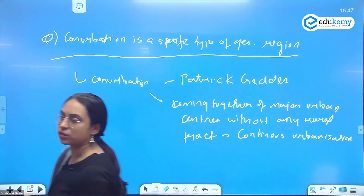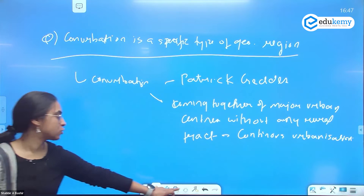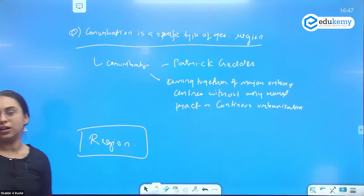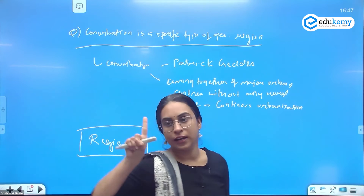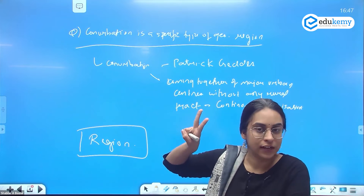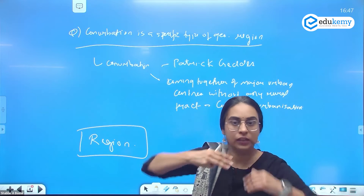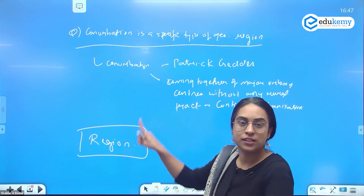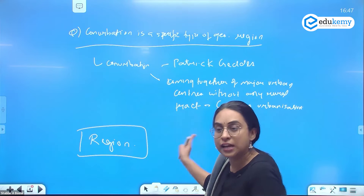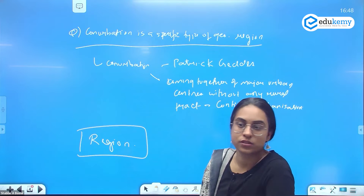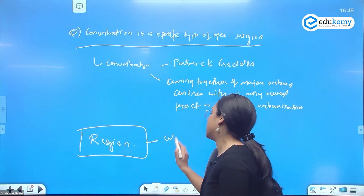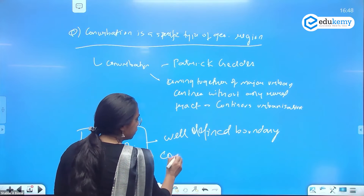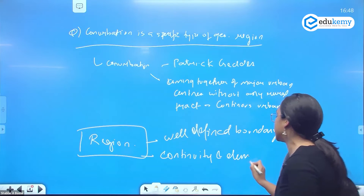Conurbation is a specific type of region. The question is: what is a region? A region has a well-defined boundary, it has homogeneity, and it has interlinkage within and between its elements. Because it has a well-defined boundary, it can be distinct from surrounding regions. So a region has a well-defined boundary, continuity, and elements of homogenization.